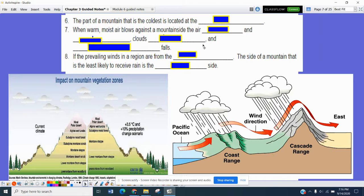And number six, the part of a mountain that is the coldest is actually located at the top. This is a map down below here on the impact on mountain vegetation zones. And depending upon what your altitude is, or elevation, will probably depend on your temperature. As you move higher up in elevation, you're going to actually drop in temperature.